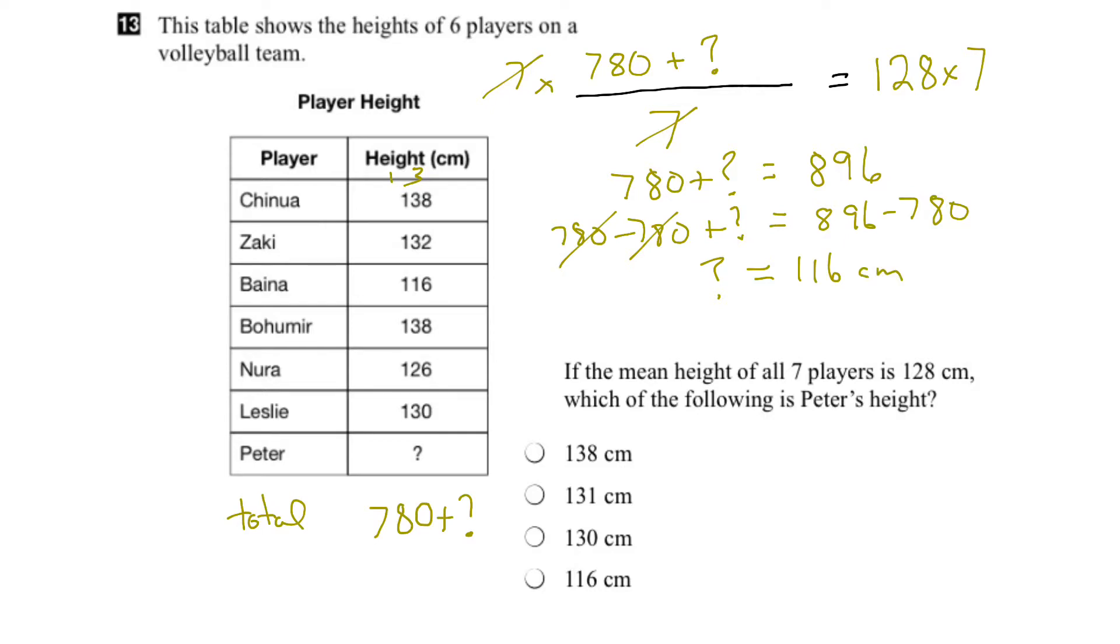So Peter's height is 116 centimeters. Now what we should do is verify. We should add up all these numbers, include Peter's height, and then divide by 7 to see if we get 128 centimeters. And if we do that, it does indeed add up. We do get a mean of 128 centimeters. Therefore, we're pretty confident that Peter is 116 centimeters tall.